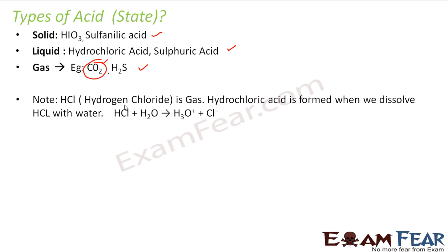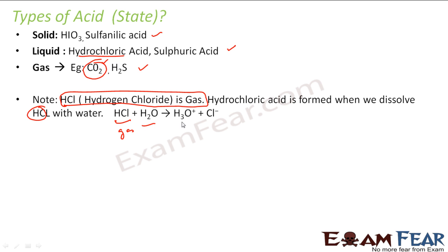We have to note that HCl is actually a gas — hydrogen chloride is a gas. Hydrochloric acid and hydrogen chloride are different. When we dissolve HCl gas in water, we get hydrochloric acid — the reaction gives H3O⁺ plus Cl⁻. We generally call HCl hydrochloric acid, but HCl is actually hydrogen chloride and it is a gas. To make hydrochloric acid, we pass this gas through water. So hydrochloric acid is liquid, but hydrogen chloride is gas, and hydrochloric acid is formed using hydrogen chloride.